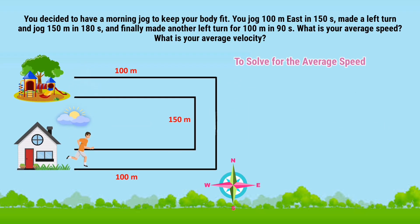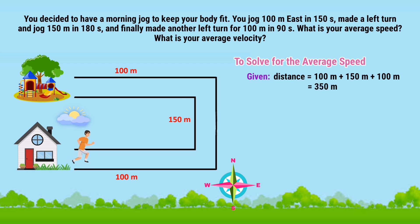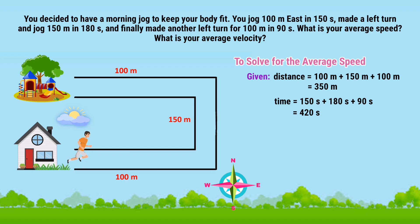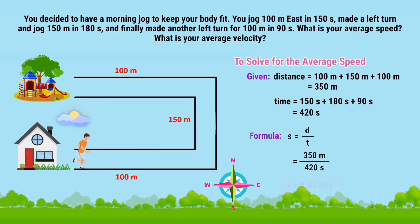In order to solve for the average speed, we need to solve first for the total distance and total elapsed time traveled. Total distance equals 100 meters plus 150 meters plus 100 meters equals 350 meters. For time, we simply get its sum: T equals 150 seconds plus 180 seconds plus 90 seconds equals 420 seconds. Now we can solve for the average speed by substituting all the values using the formula S equals D over T. That's 350 meters divided by 420 seconds. Average speed equals 0.83 meters per second.